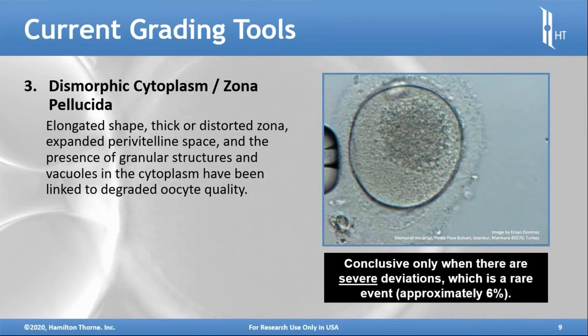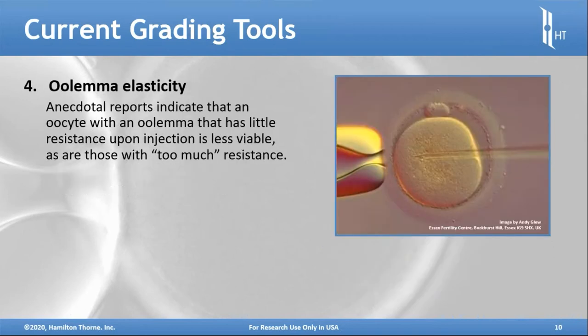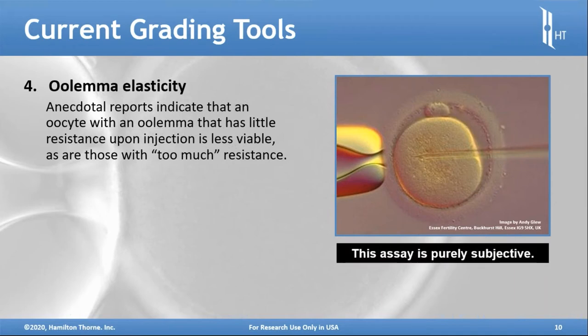These indicators are really conclusive only when the damage or deviation is severe, and that's a small percentage of retrieved oocytes. There are anecdotal reports of another grading tool called oolemma elasticity. It's very subjective and probably only indicative to those with a lot of ICSI experience who have a feel for when the oolemma itself is not very elastic — a sign of less viable oocytes. But again, this is very subjective.